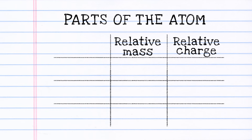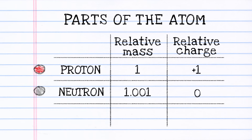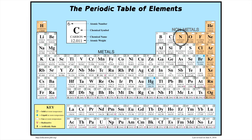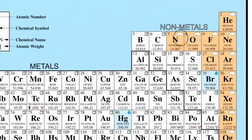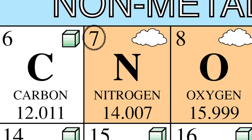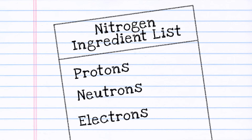In general, atoms contain protons, neutrons, and electrons. So, how many protons, neutrons, and electrons are in an atom of nitrogen? We can tell from the table of elements. Let's take a close look at nitrogen. See the number in the upper corner? That number is called the atomic number. It tells us how many protons are in an atom of an element. Nitrogen's atomic number is 7. That means every atom of nitrogen has exactly 7 protons.